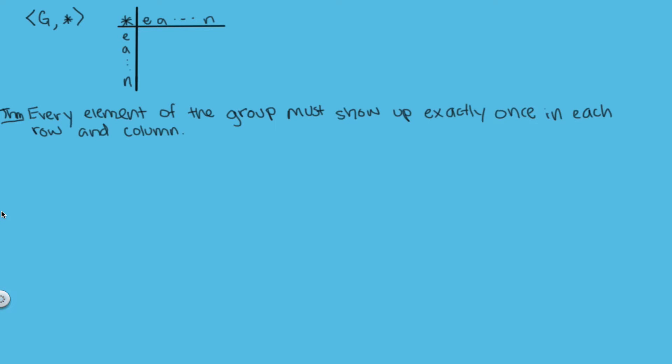Hi, this video is going to be a proof of the group property that says if we have a group G with a set G and the binary operation star, where the binary operation is defined by some binary operation table with the n elements of the group, the property says that every element of the group must show up exactly once in each row and each column.